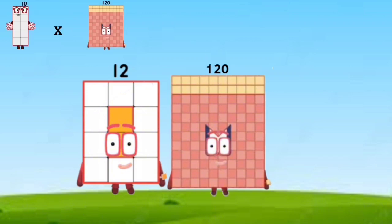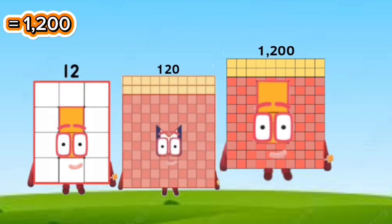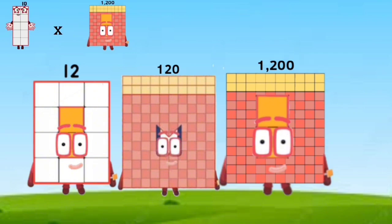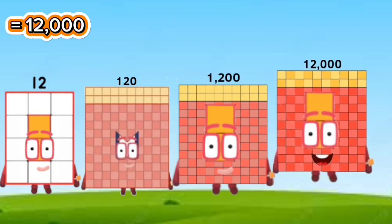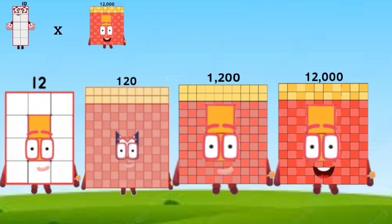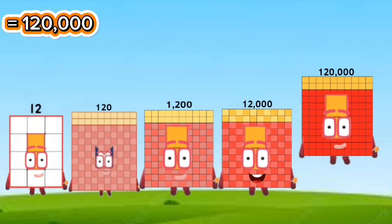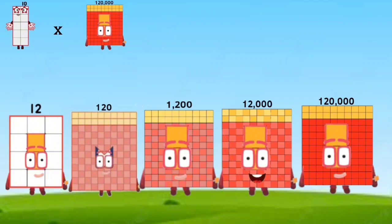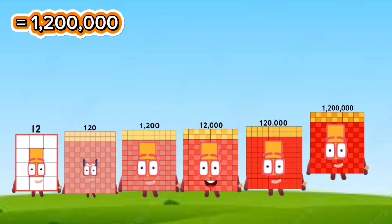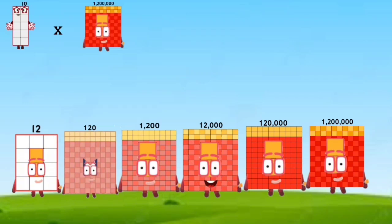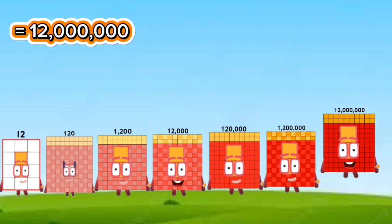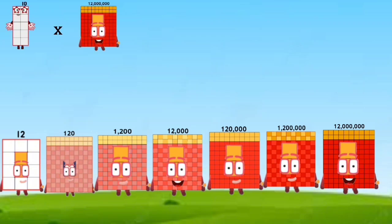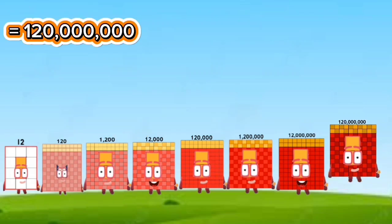10 times 12 to 120,000,000. 10 times 12 equals 120. 10 times 120 equals 1,200. 10 times 1,200 equals 12,000. 10 times 12,000 equals 120,000. 10 times 120,000 equals 1,200,000. 10 times 1,200,000 equals 12,000,000. 10 times 12,000,000 equals 120,000,000.